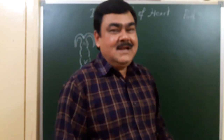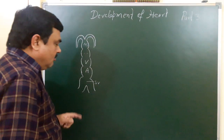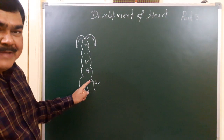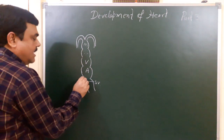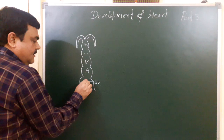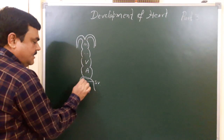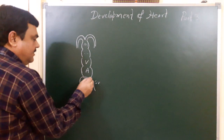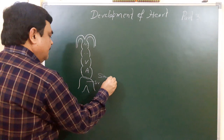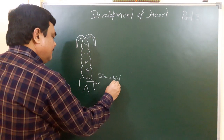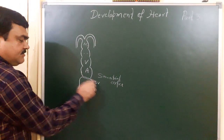We will now discuss the development of the heart, Part 3. In this part, we will discuss the fate of the sinus venosus and the sino-atrial orifice. This is the sino-atrial orifice between the sinus venosus and the atrium, and this is the sinus venosus.